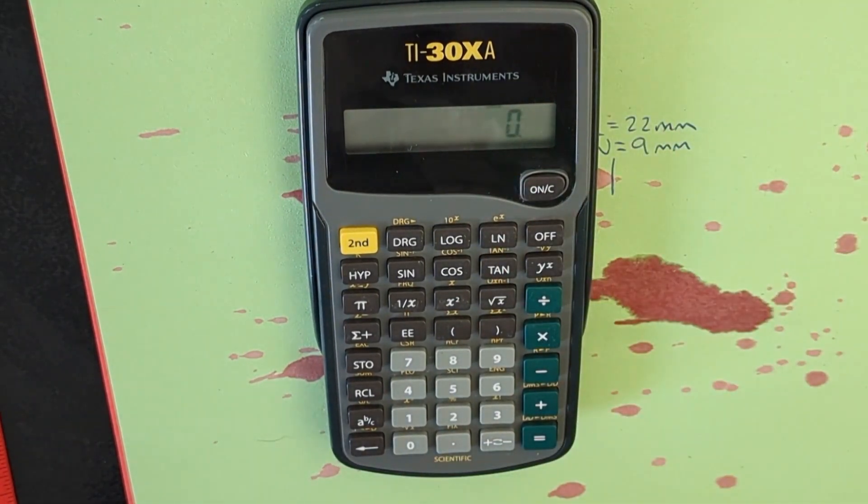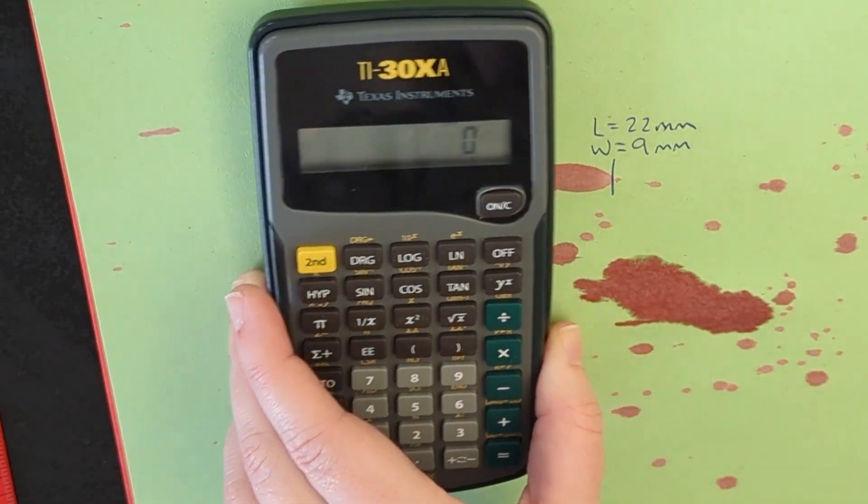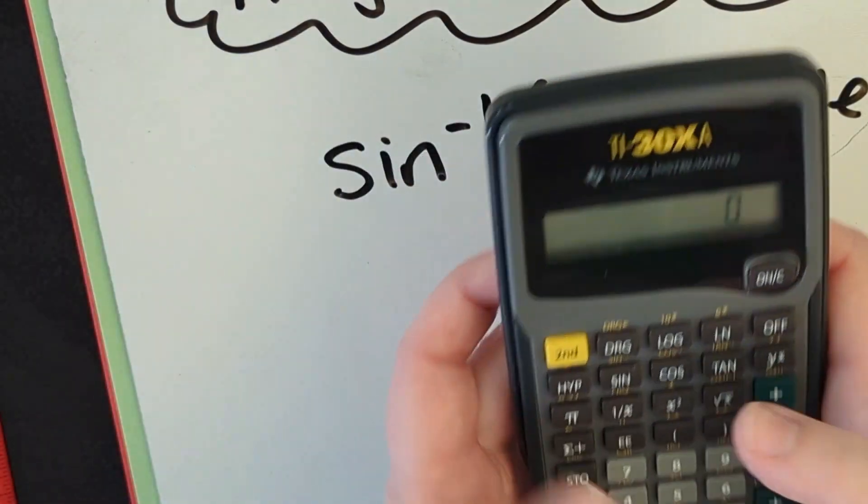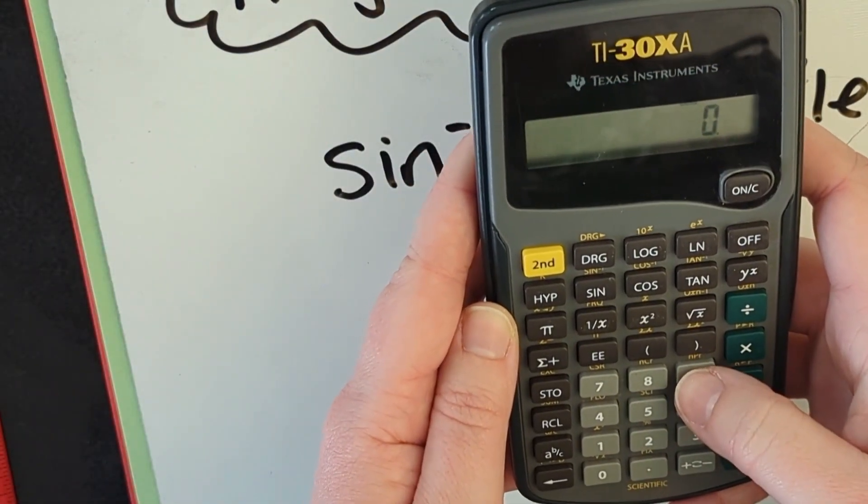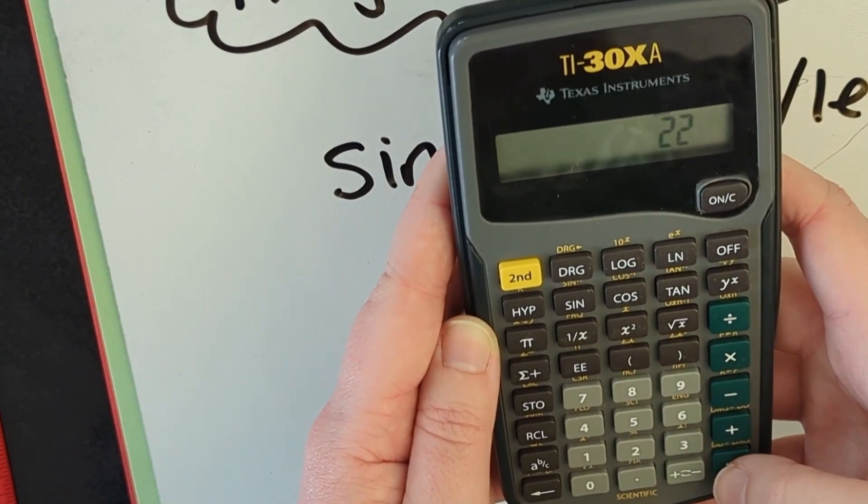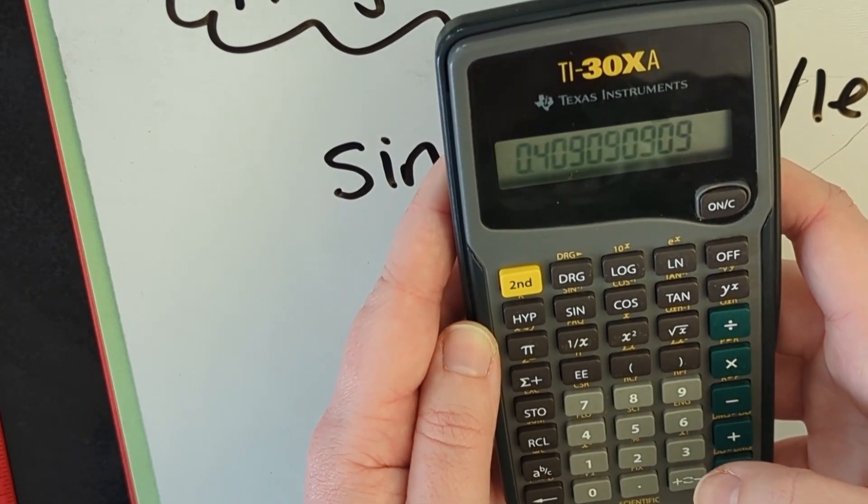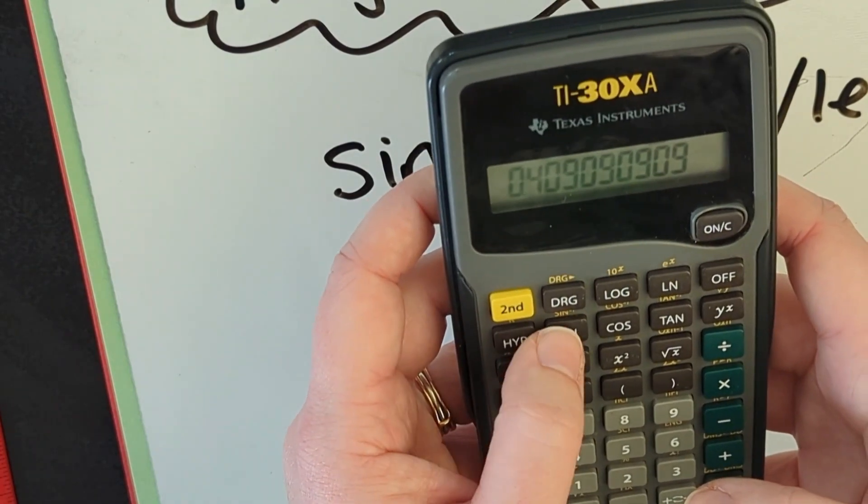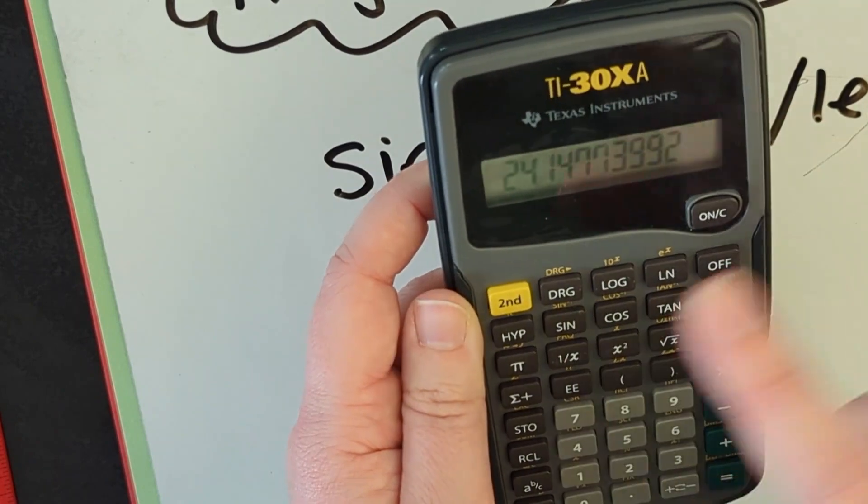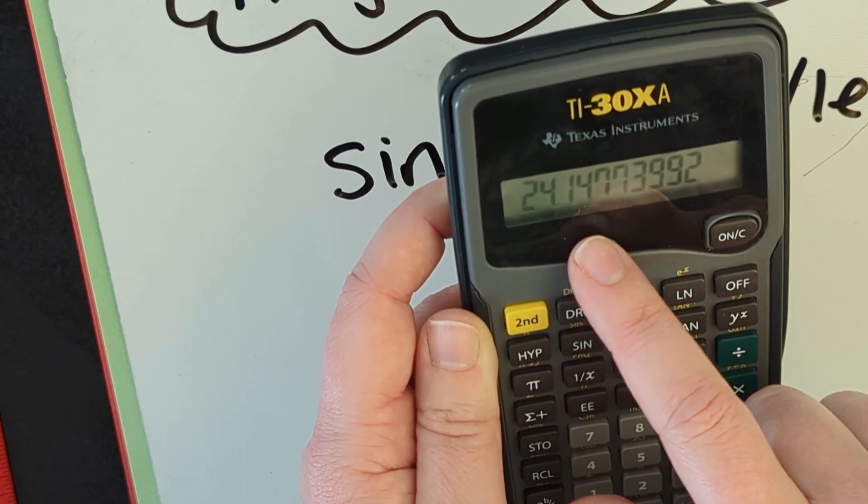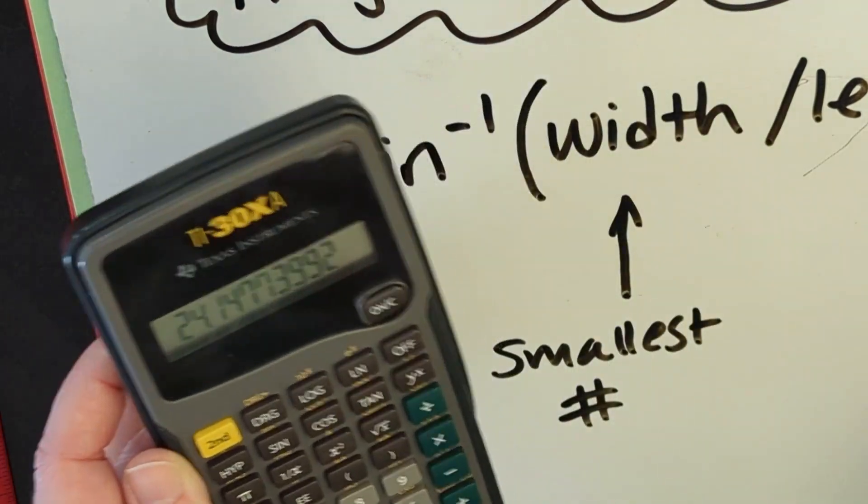We're going to follow that equation. So I've got nine and 22. We're going to do nine divided by 22 equals but we're not done yet because we need to get the inverse sine of it. So second sine, our blood drop hit at an angle of 24.15 degrees if we round it up.